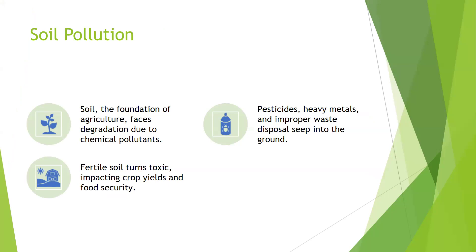Soil pollution: Soil is the foundation of agriculture. Degradation due to chemical pollutants persists — heavy metals and improper waste disposal sink into the ground, making it toxic and threatening food security. People have found new ways of using chemicals, and due to this there has been degradation of crops. This is the main reason our food is polluted by pesticides, heavy metals, and improper waste disposal.